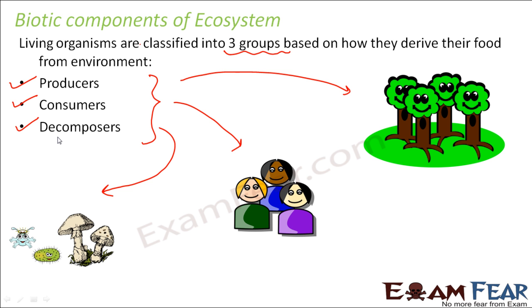Producers are those who produce food — the green plants are the ones who produce food. Consumers are those who consume it; the food has been prepared by somebody else and somebody else is eating it. Just like one person in the house prepares food — your mother is the producer — and all the family members who consume it are the consumers. Similarly, plants are the producers, other animals are consumers, and decomposers help in decomposition of organic matter when a plant, animal, or any other living organism dies.